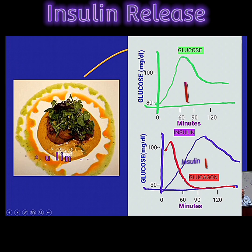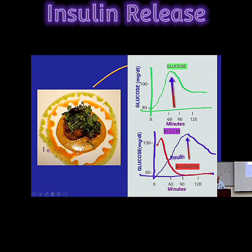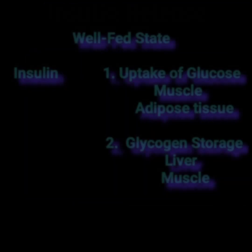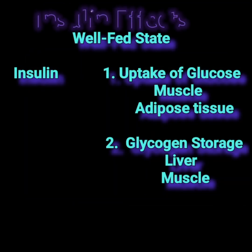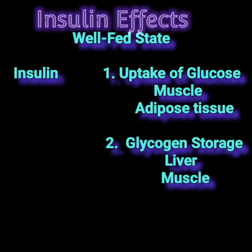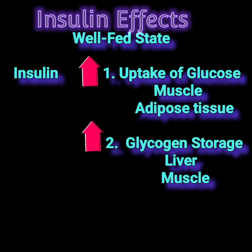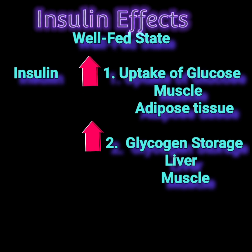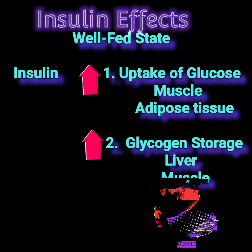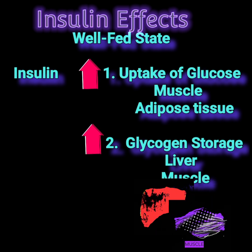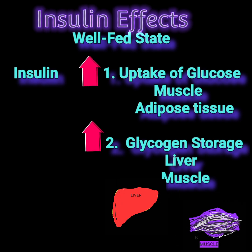That insulin is secreted by the beta cells of the pancreas. Insulin released after a meal will promote the uptake of glucose specifically into muscle and adipose tissue, while at the same time promoting the storage of glucose in the form of glycogen in liver and muscle.